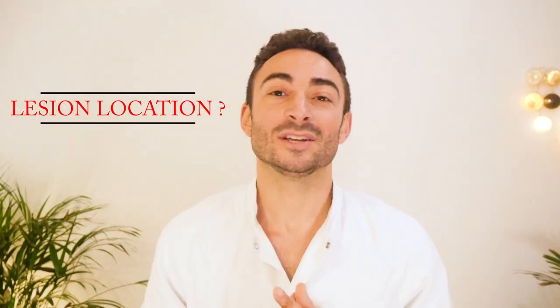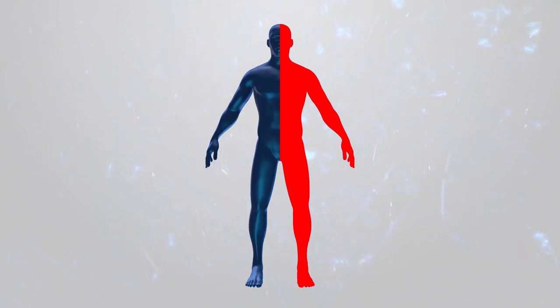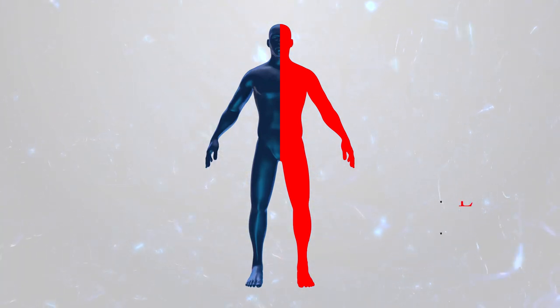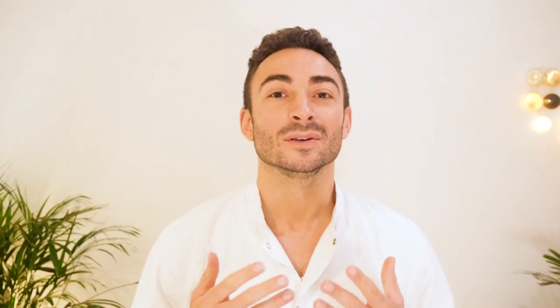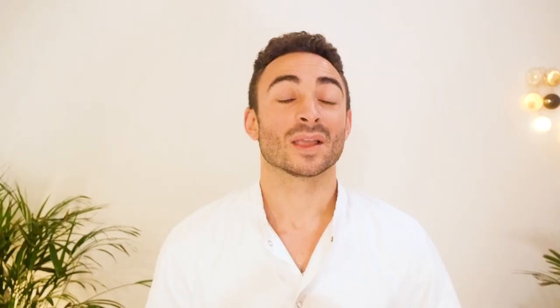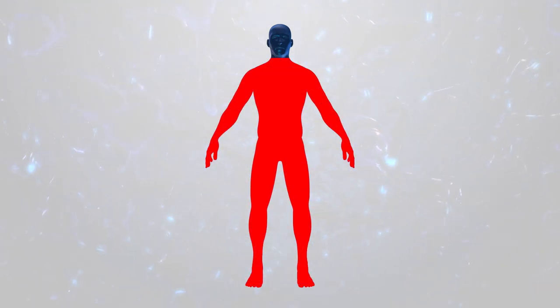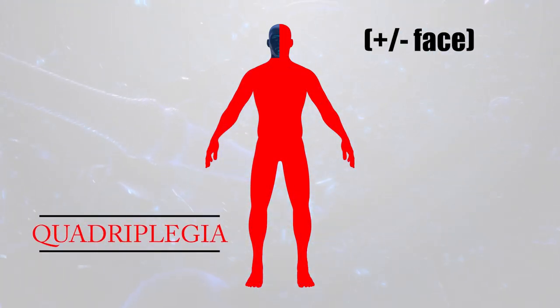Depending on which part of the brain has been damaged, different parts of the body will be affected. When one or two limbs from the same side of the body are affected, we call that hemiplegia. When only the legs are affected, we call that diplegia. When both your legs, arms, trunk, and face are affected, we call that quadriplegia.